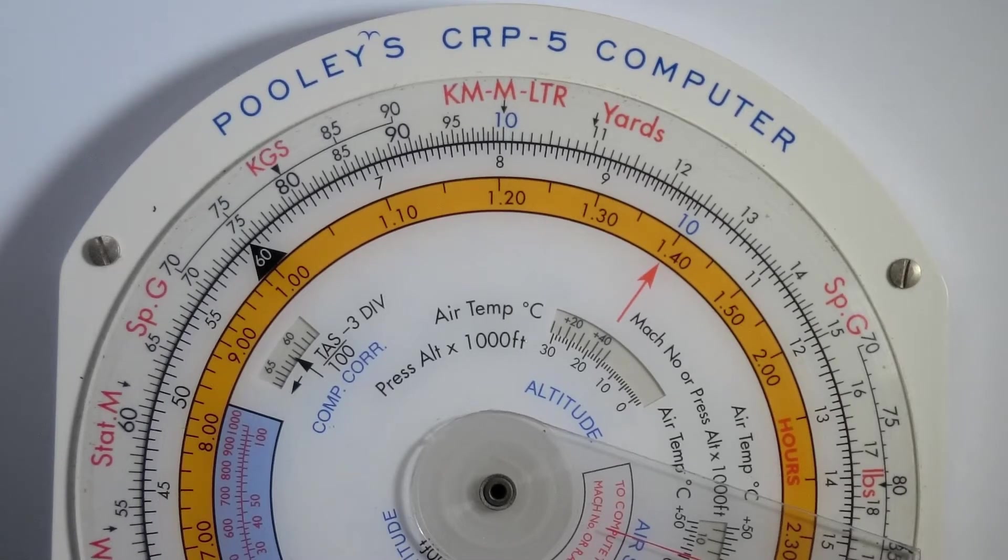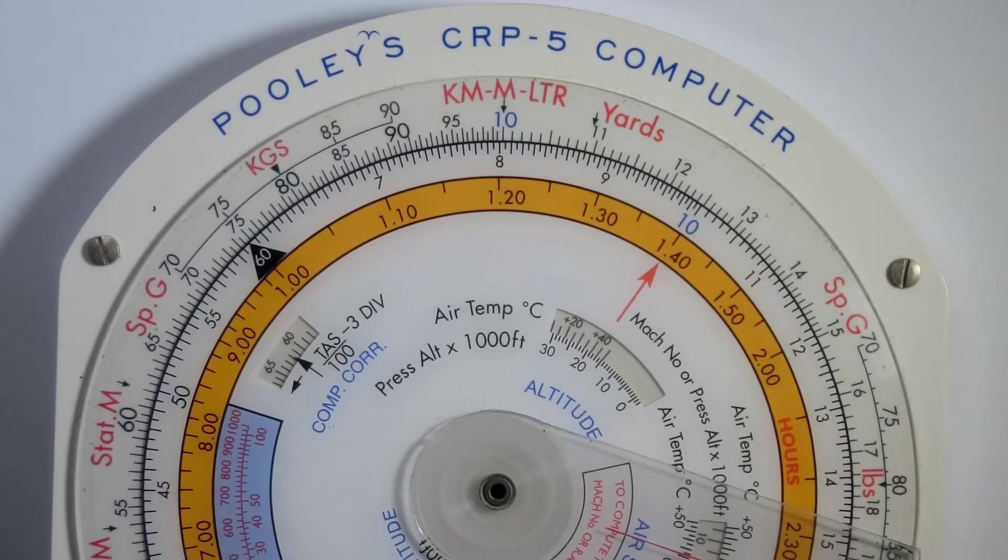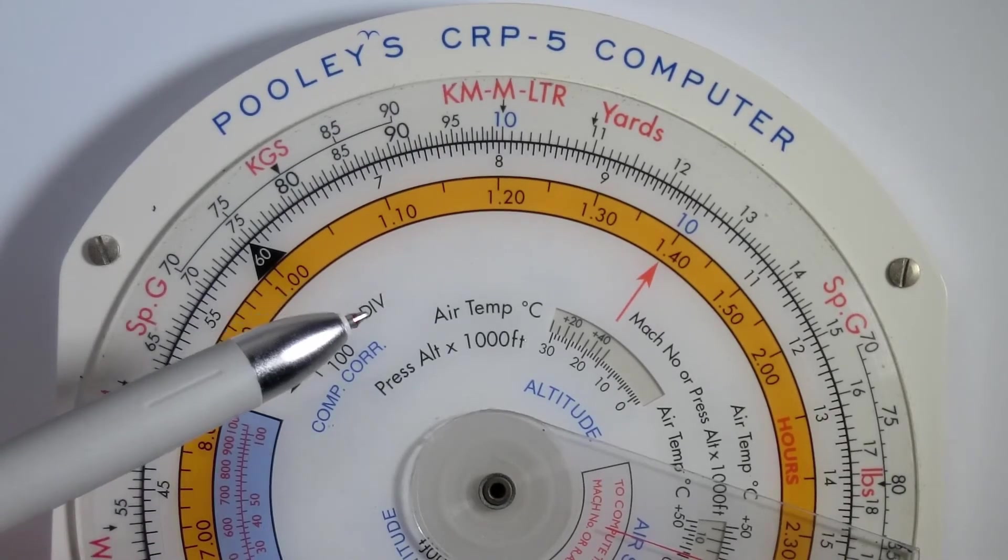How do we calculate the true airspeed given that these corrections have already been applied to indicated airspeed? Let me first introduce you to the scale.